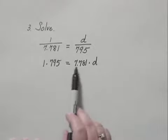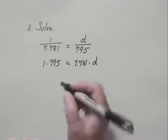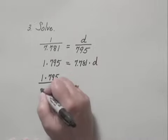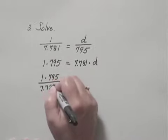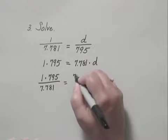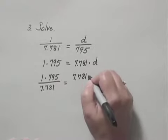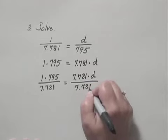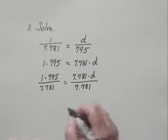And to solve this, we will divide both sides by 7.781. So we have 1 times 795 over 7.781 equals 7.781 times D over 7.781.